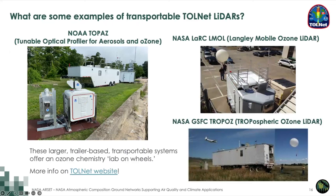I want to give you an impression of the sizes of TOLNet instrumentation. We started with five charter instruments in 2012, primarily trailer-based, deployed for larger field network campaigns. On the left is the NOAA TOPAZ (Tunable Optical Profiler for Aerosols and Ozone); on the right are the NASA Langley Mobile Ozone Lidar and the NASA Goddard Tropospheric Ozone Lidar. These larger trailer-based systems offer an ozone chemistry laboratory on wheels and are often co-located with surface analyzers, ozone sondes, aerosol sensors, and other lidars.